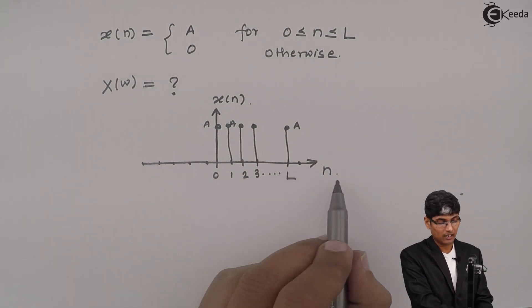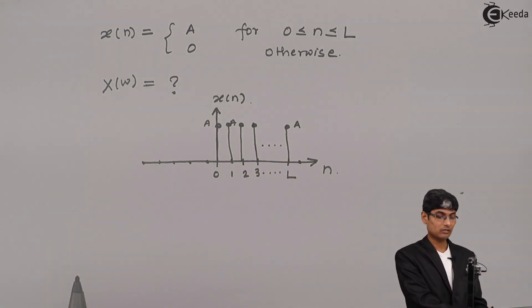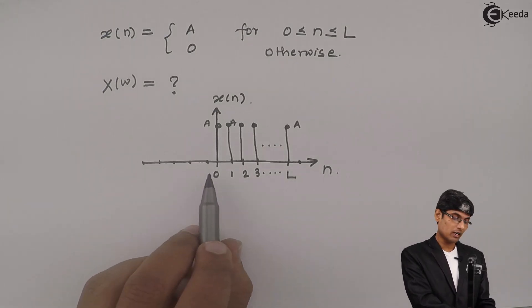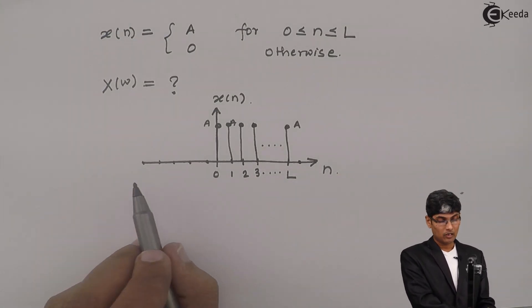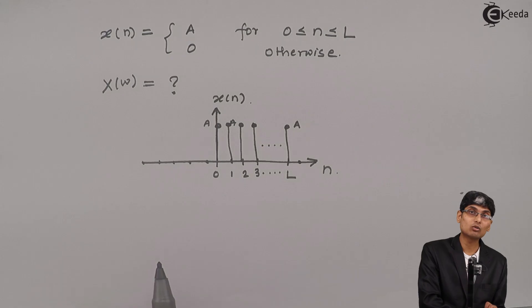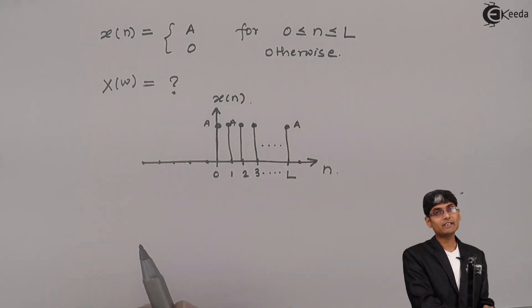Zero otherwise means except at L, after L everything goes to 0 and before 0 everything is 0. This is how my signal x(n) looks like and I have to find X(ω).